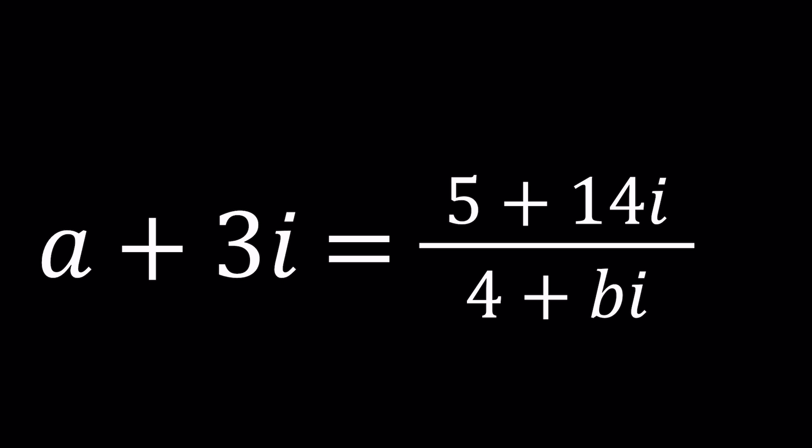Okay, so here's the complex logic. We have this equation a plus 3i which is equal to 5 plus 14i divided by 4 plus bi and guess what we're going to solve for? A and B values because those are the only unknowns.